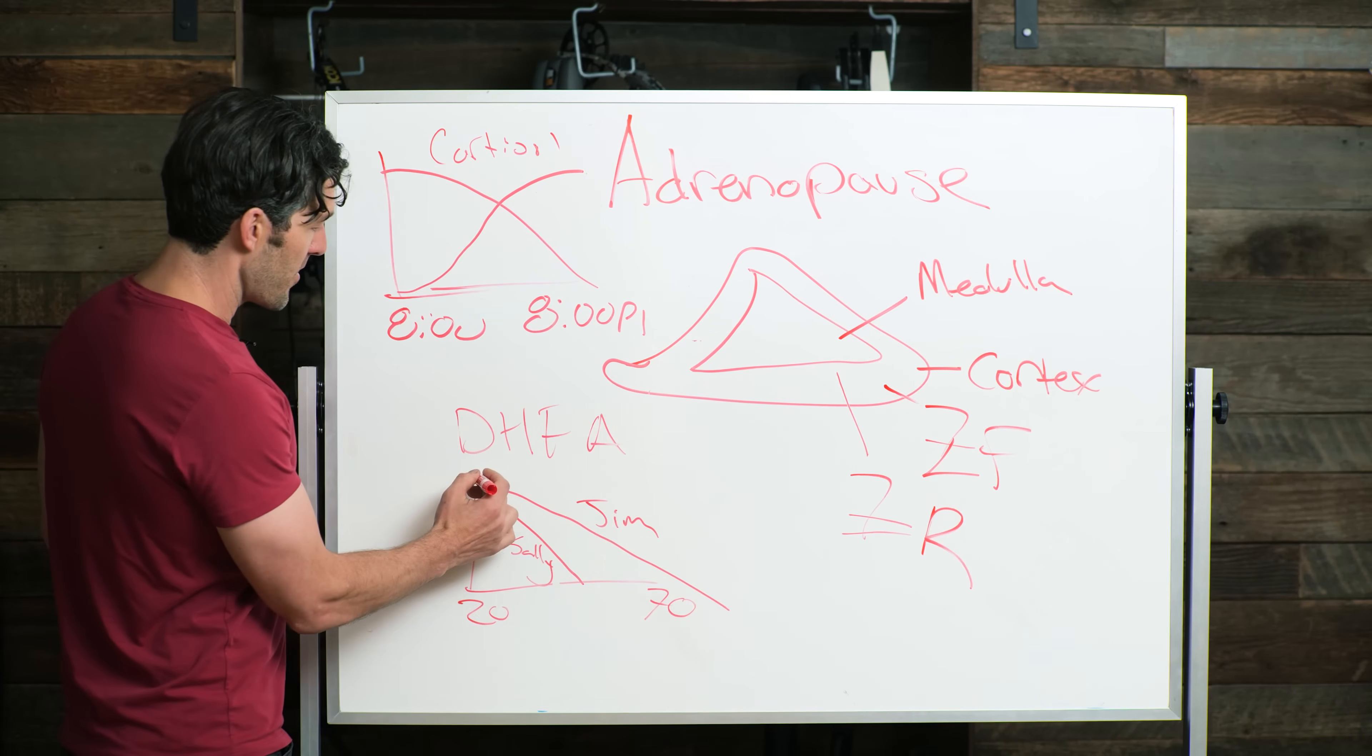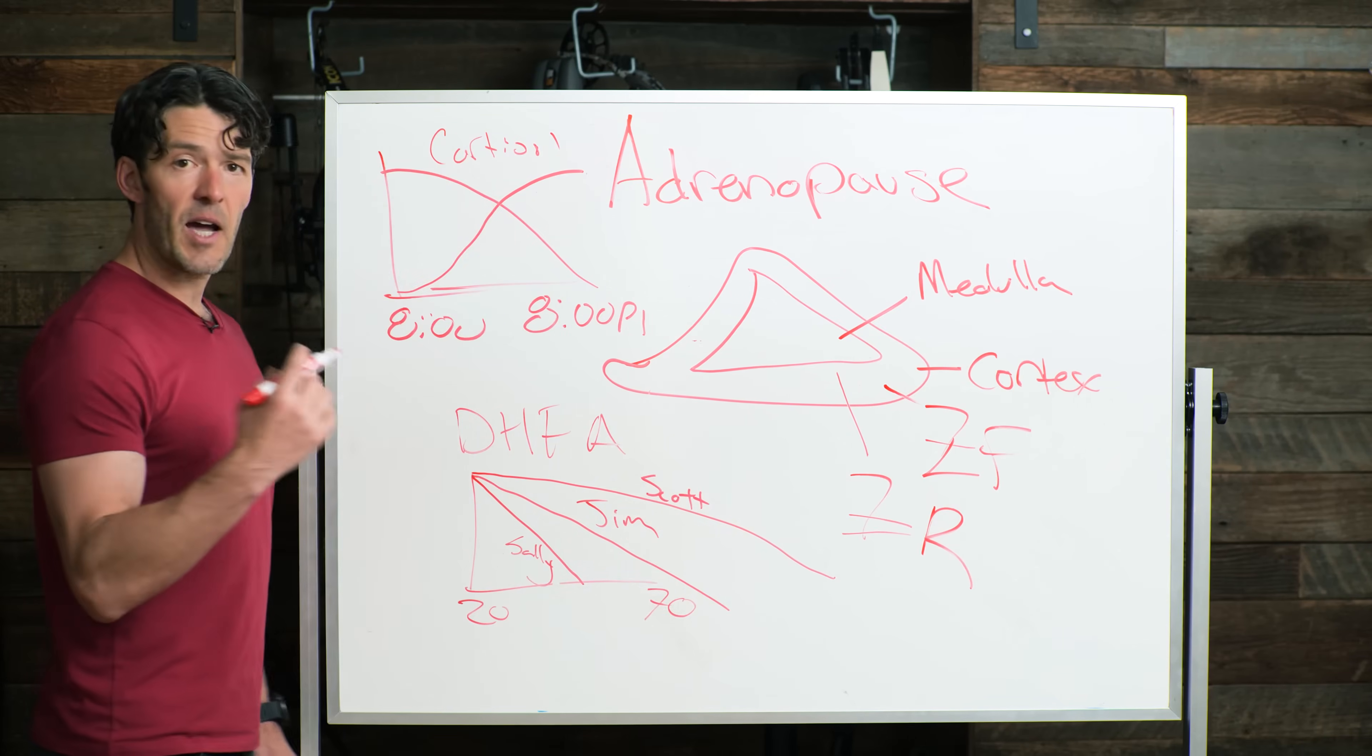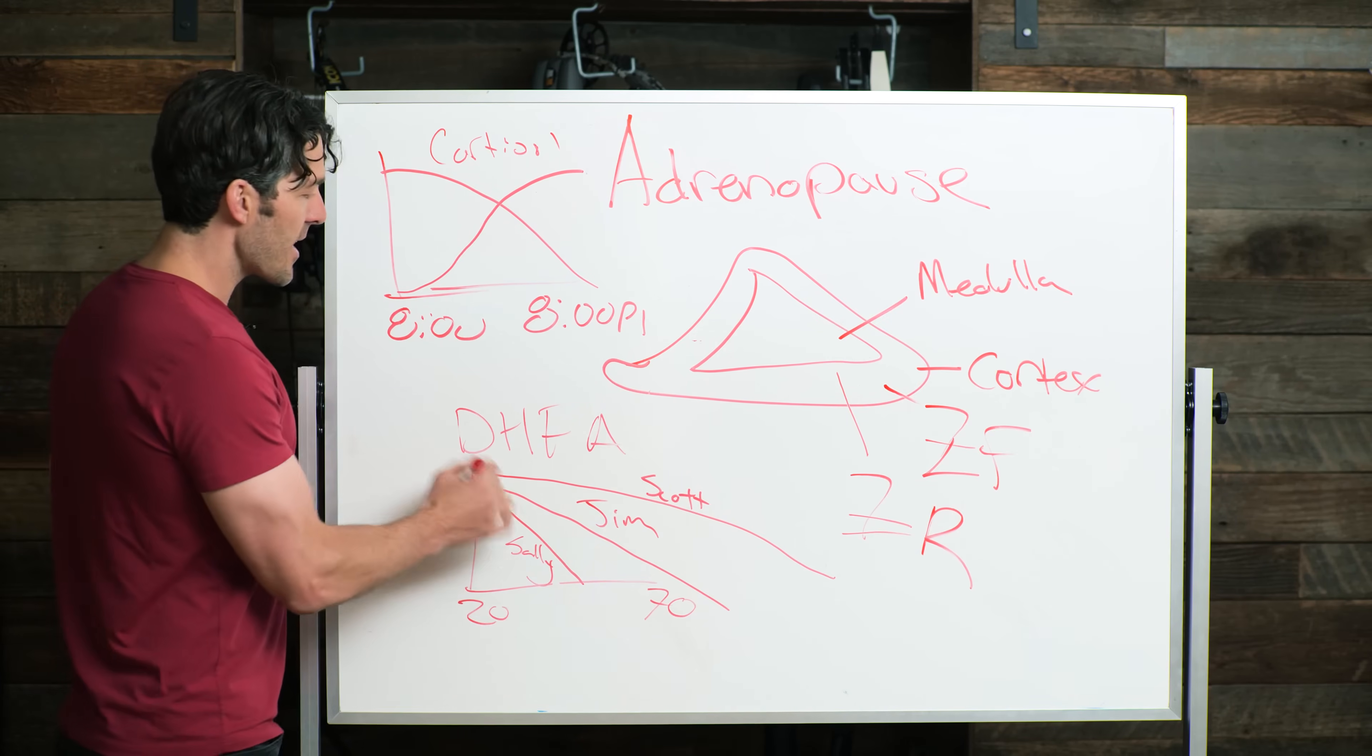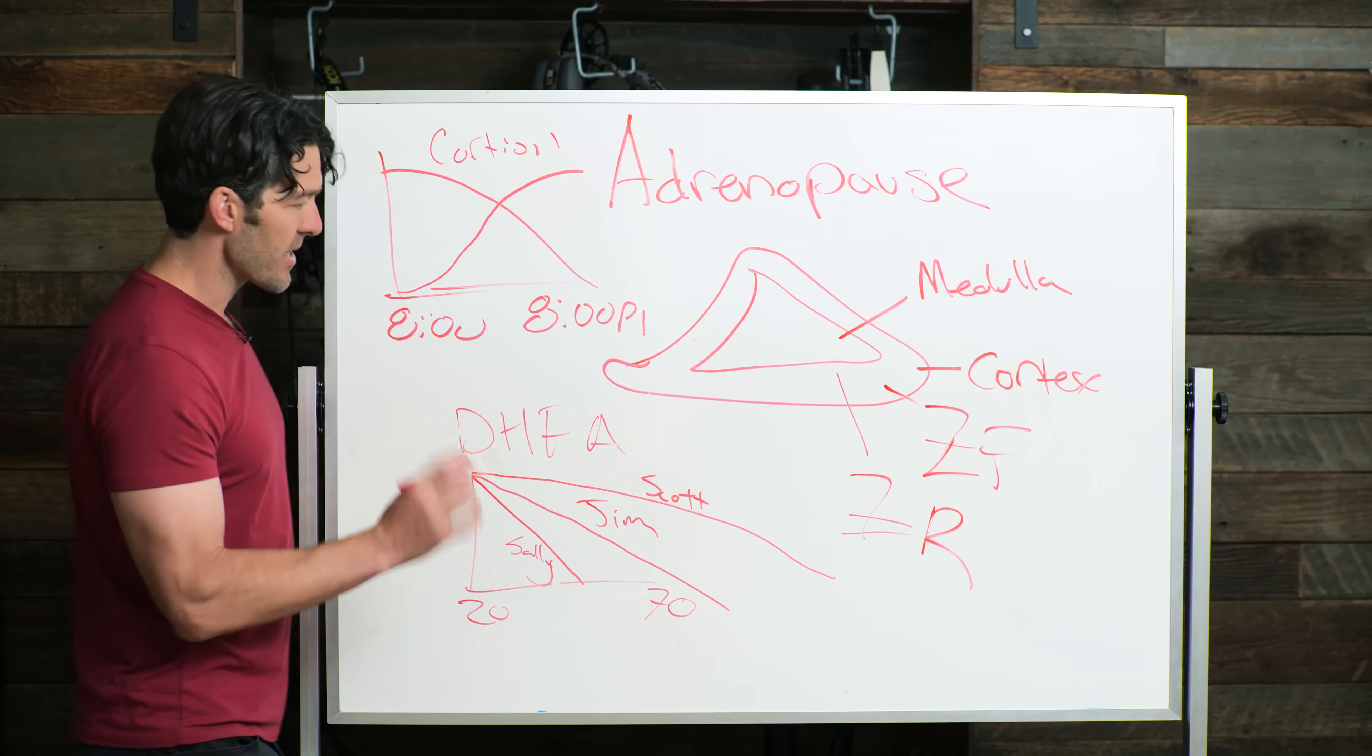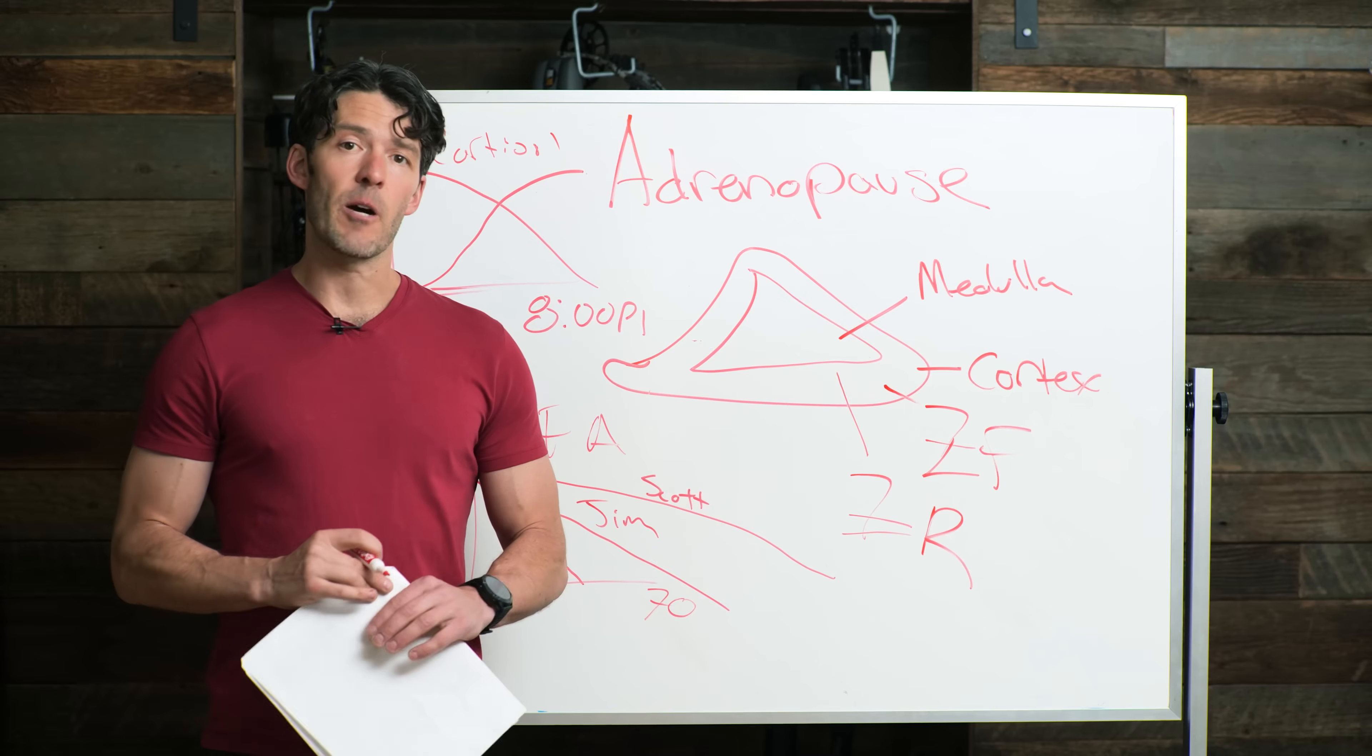So Sally is noticing a sort of acceleration of the adrenopause because maybe she's on her iPhone at night, maybe she eats a lot of processed food, maybe she does not exercise, maybe she doesn't manage her stress, maybe she's never done any breath work or meditation or been into a sauna. And you could have Scott here. So Scott does all sorts of resistance training, eats a high protein diet, gets good sleep, he's got all his devices turned off at 9 PM and so forth. So he's not experiencing the rate of adrenopause compared to Jim and Sally. It's individual depending upon your lifestyle.